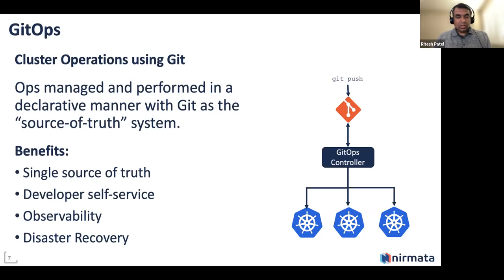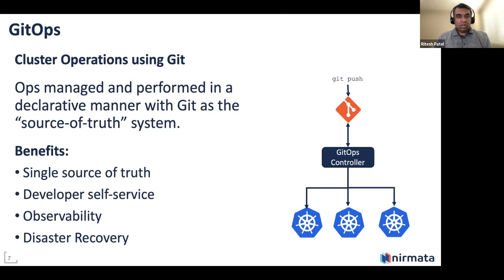The benefits of GitOps are that Git becomes a single source of truth. It also enables developer self-service because most developers are familiar with Git commands like commit and push. It provides observability into exactly what's running in your cluster. And if you lose your cluster or running application, you can easily recover from your Git repo.